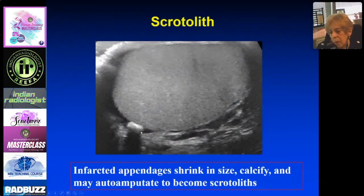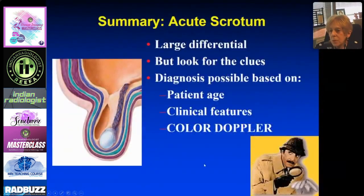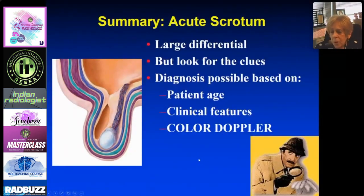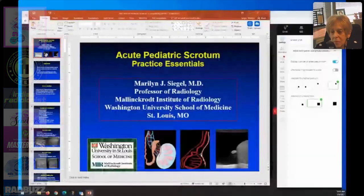In the acute scrotum there is a differential, and there are clues to everything: patient age, clinical features, and color Doppler all play a role in reaching the correct diagnosis. Thank you for your attention.